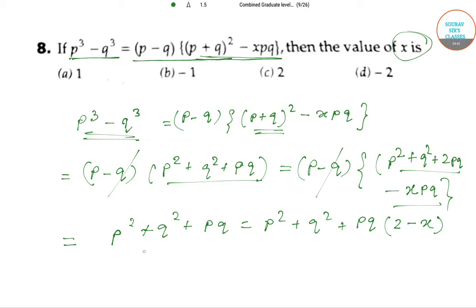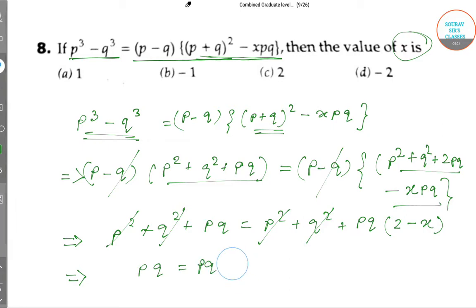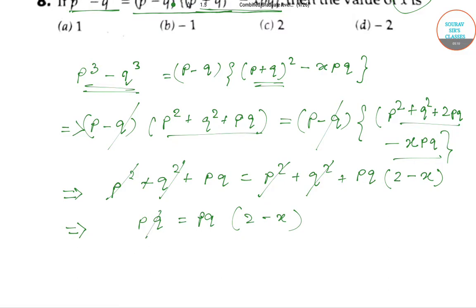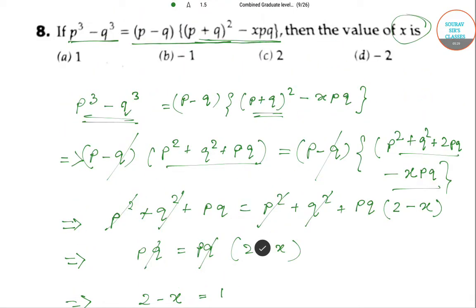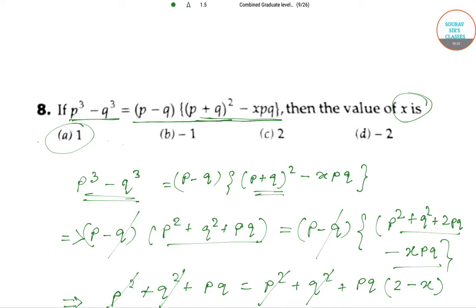Now we can eliminate P² and Q² from both sides, leaving PQ equals 2PQ times 2 minus X. From here we can eliminate PQ and write 2 minus X equals 1, so X equals 1. That is our answer — option A, that is 1. Thank you for watching this video.